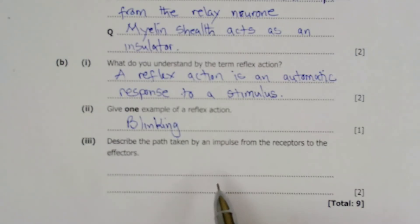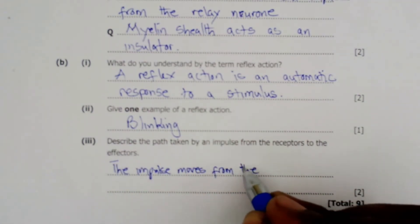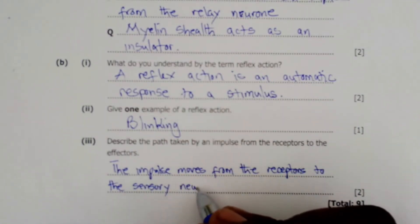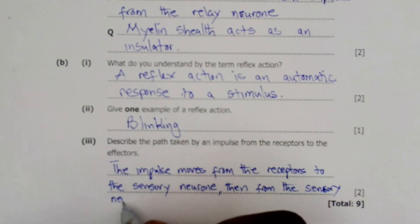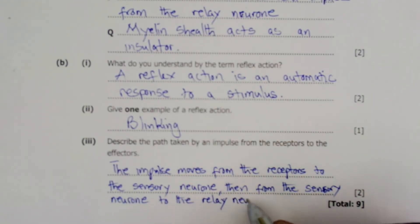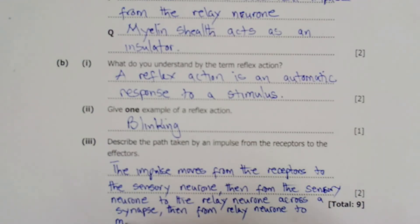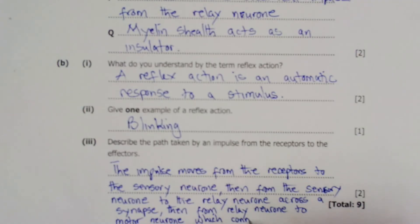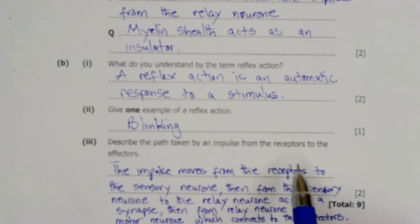Then again, the relay will then transmit the information to the motor neuron. Then the motor neuron then delivers the information to the effectors, which can be either the muscles or the gland, so that an effect can take place.